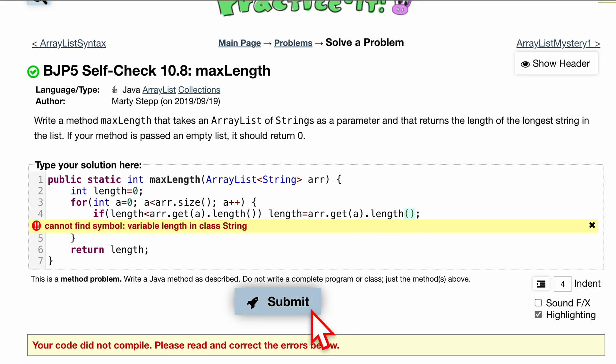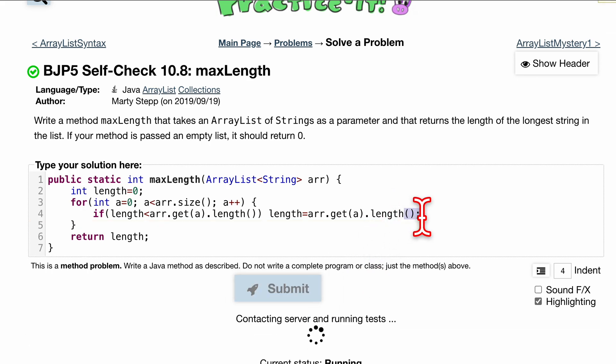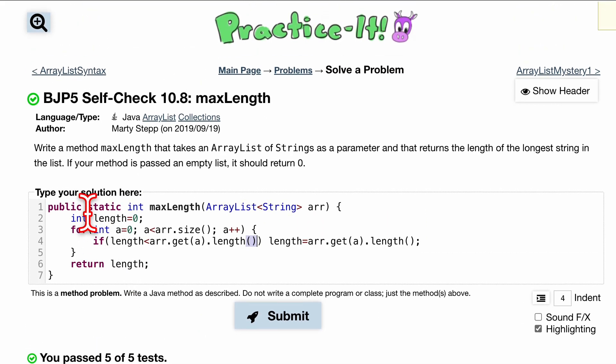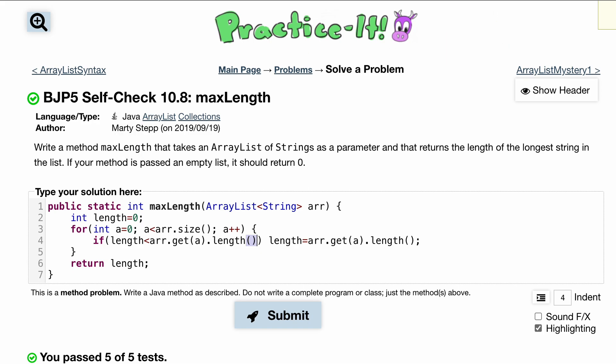We might have an issue with this one. This one doesn't have parentheses, meaning that it wasn't calling this method properly. So we have the parentheses here, just like we had here, and that will pass 5 out of 5 tests, and that's how we do self-check 10.8 max length.